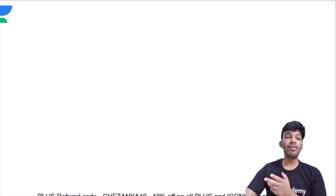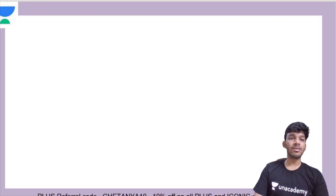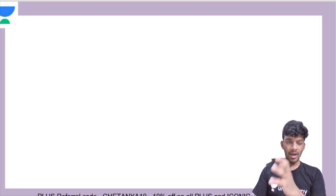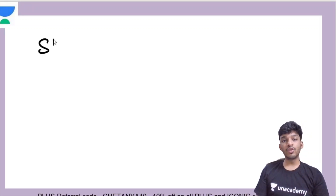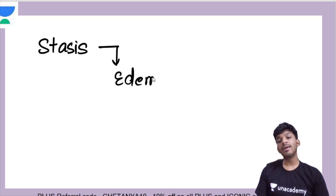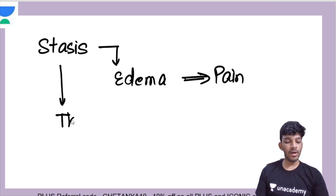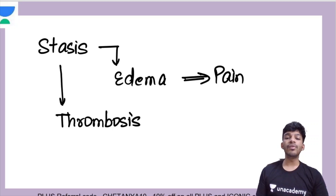What are the main clinical features? How will the patient present to you? The main thing is there is going to be apparent dilatation of the veins. There will be stasis and congestion, which also leads to edema. It is also painful for a lot of patients. And because there is stasis, there are also chances of thrombosis.